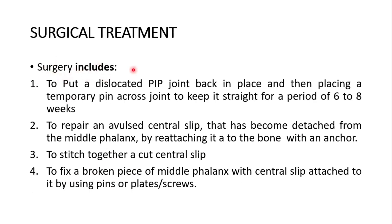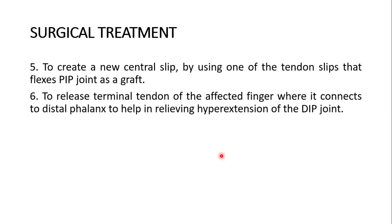Surgery can decrease pain and improve function but may not fully correct the deformity. Surgical procedures include: putting a dislocated proximal interphalangeal joint back in place and placing a temporary pin across the joint for six to eight weeks; reattaching an avulsed central slip detached from the middle phalanx to bone with an anchor; stitching together a cut central slip; fixing a broken piece of middle phalanx with pins, plates, or screws; creating a new central slip using a tendon slip as a graft; and releasing the terminal tendon of the affected finger at the distal phalanx to relieve hyperextension of the distal interphalangeal joint.